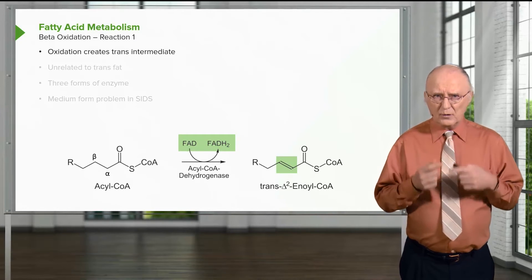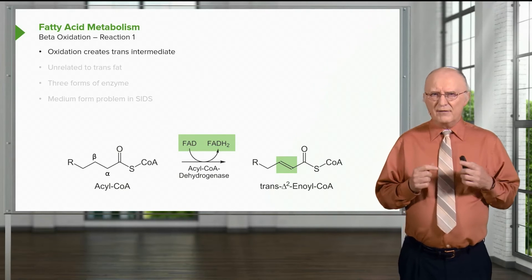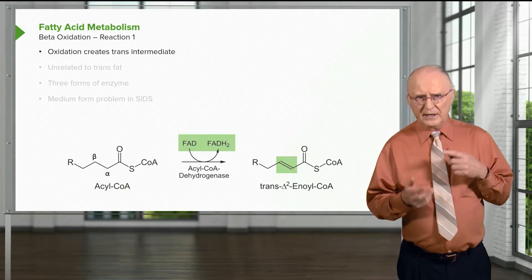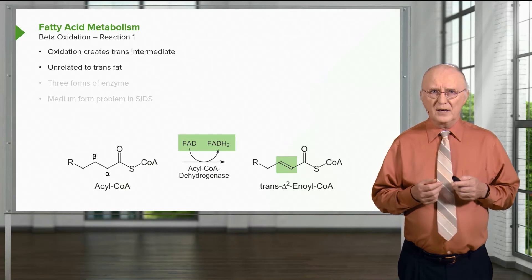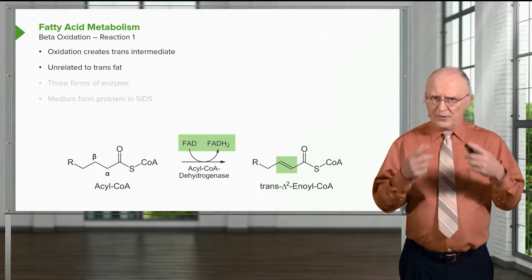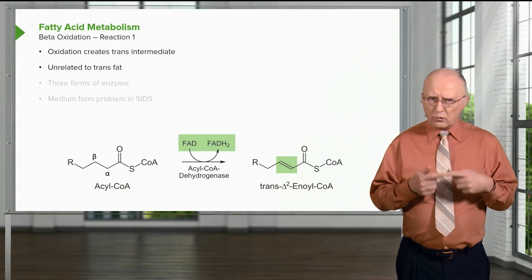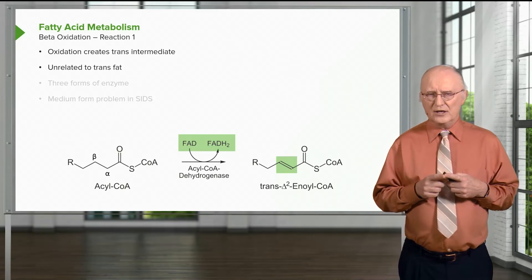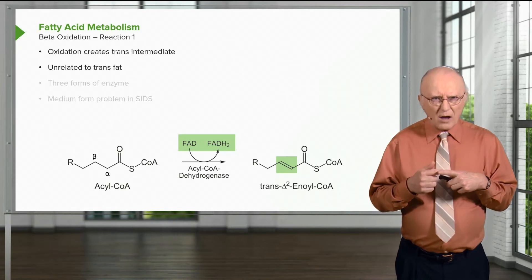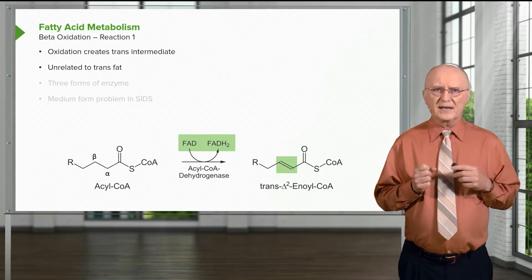The first oxidation step is catalyzed by an enzyme called acyl-CoA dehydrogenase. All the action in fatty acid oxidation occurs between carbons 2 and 3, or the alpha and beta carbons. The first oxidation removes electrons and protons, which are donated to FAD to make FADH2. The result creates a trans-bonded fatty acid called trans-Delta-2-Enoyl-CoA. Importantly, this is a trans fatty acid, but it is not related to trans fat — trans fat is made for other reasons.